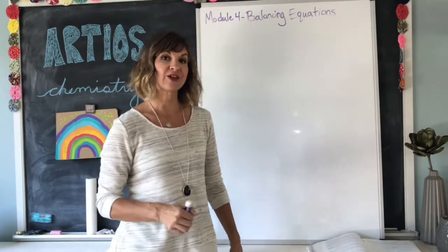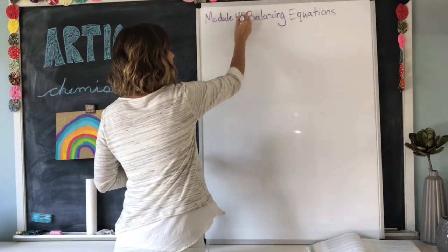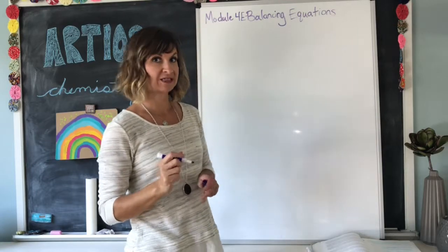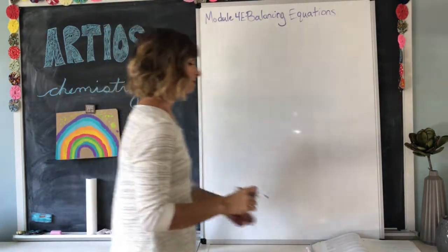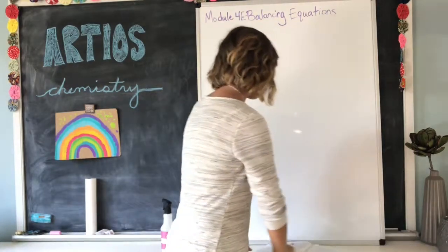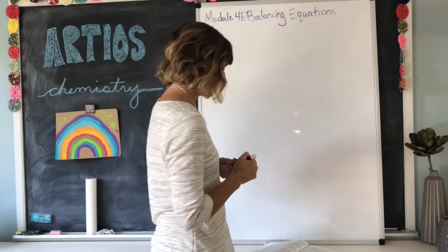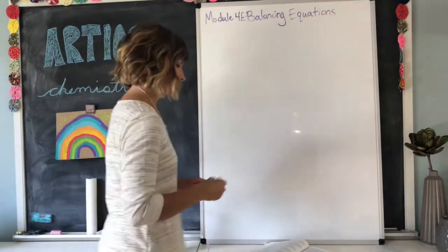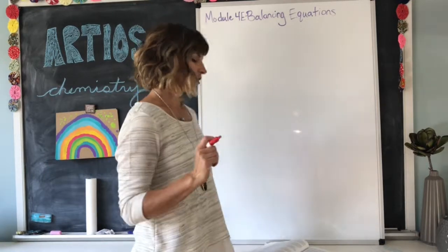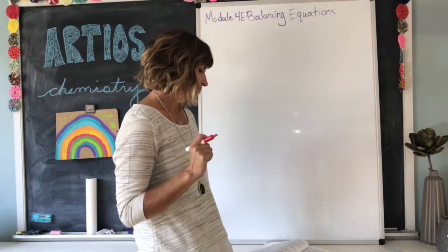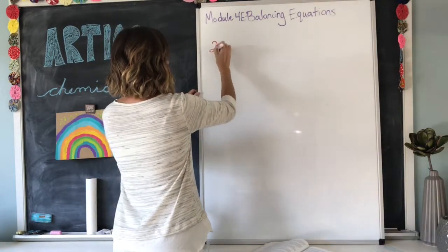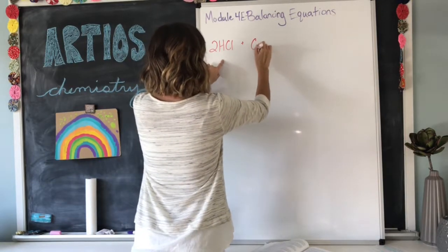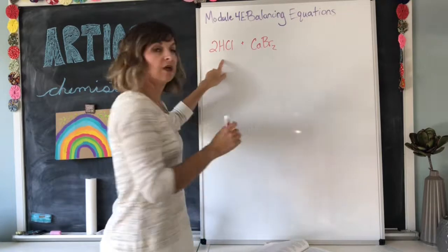Back at the end of module four, this is video 4E. It's the last video for module four, and we are going to practice balancing the equation. So, let's do example 4.1 together in your book. It's on page 121. Determine whether or not the following equation is balanced. We have 2HCl plus CaBr2.